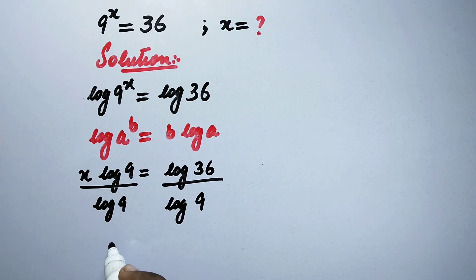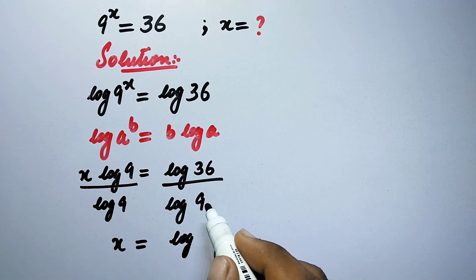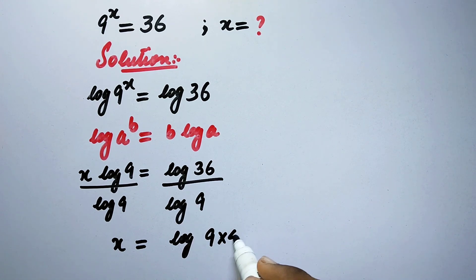So now we will get here x equal to log of 36, which is same as log of 9 multiplied by 4, divided by log of 9.